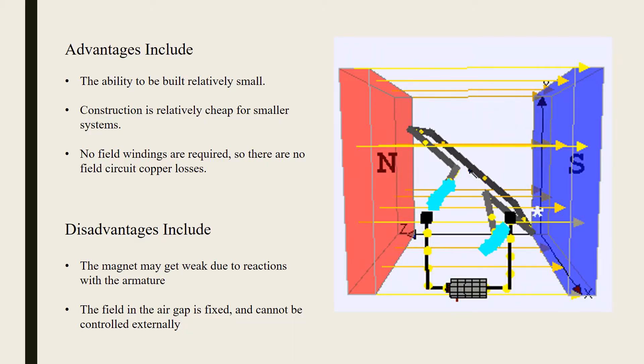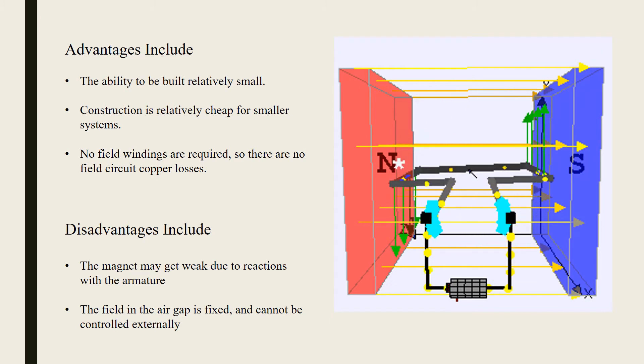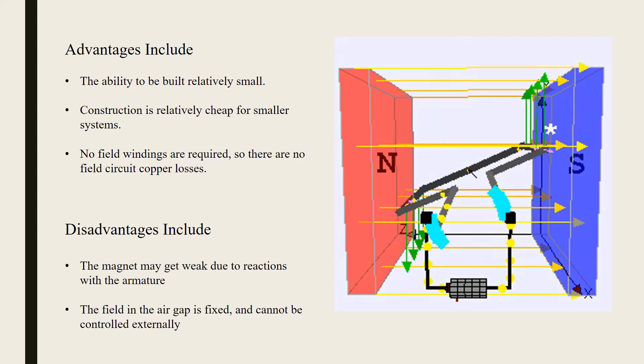Advantages include the ability to be built relatively small. Construction is relatively cheap for smaller systems. No field windings are required, so there are no field circuit copper losses.